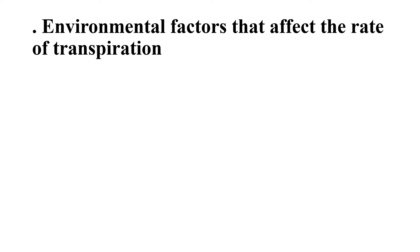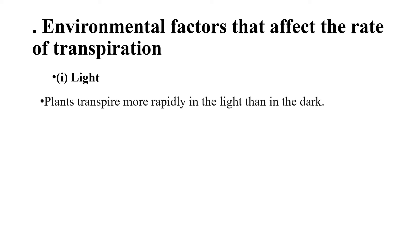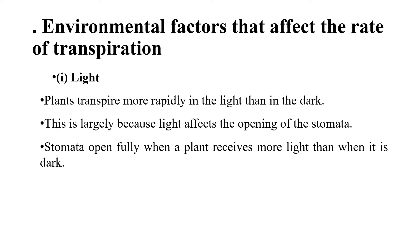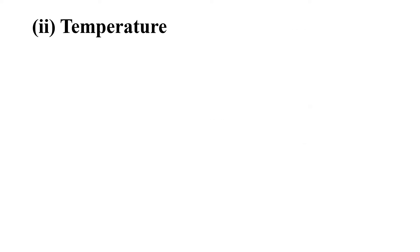Environmental factors that affect the rate of transpiration. 1. Light: Plants transpire more rapidly in the light than in the dark. This is largely because light affects the opening of the stomata. Stomata open fully when a plant receives more light than when it is dark.